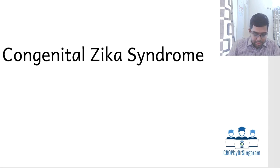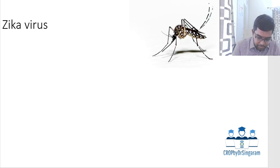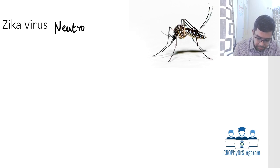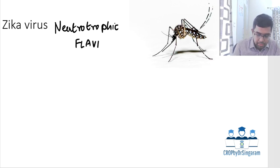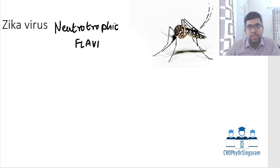Zika virus is a flavivirus, specifically a neurotropic flavivirus. It was first described in Uganda in 1947 in the Zika forest, which is why it gets the name Zika virus.